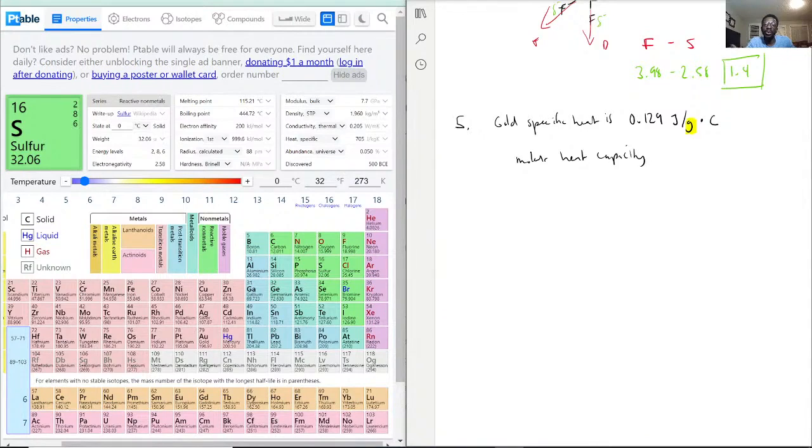The one thing we need is the molar mass of gold. In this case, because it appears in nature as just gold by itself, it's going to be the atomic mass unit from the periodic table.